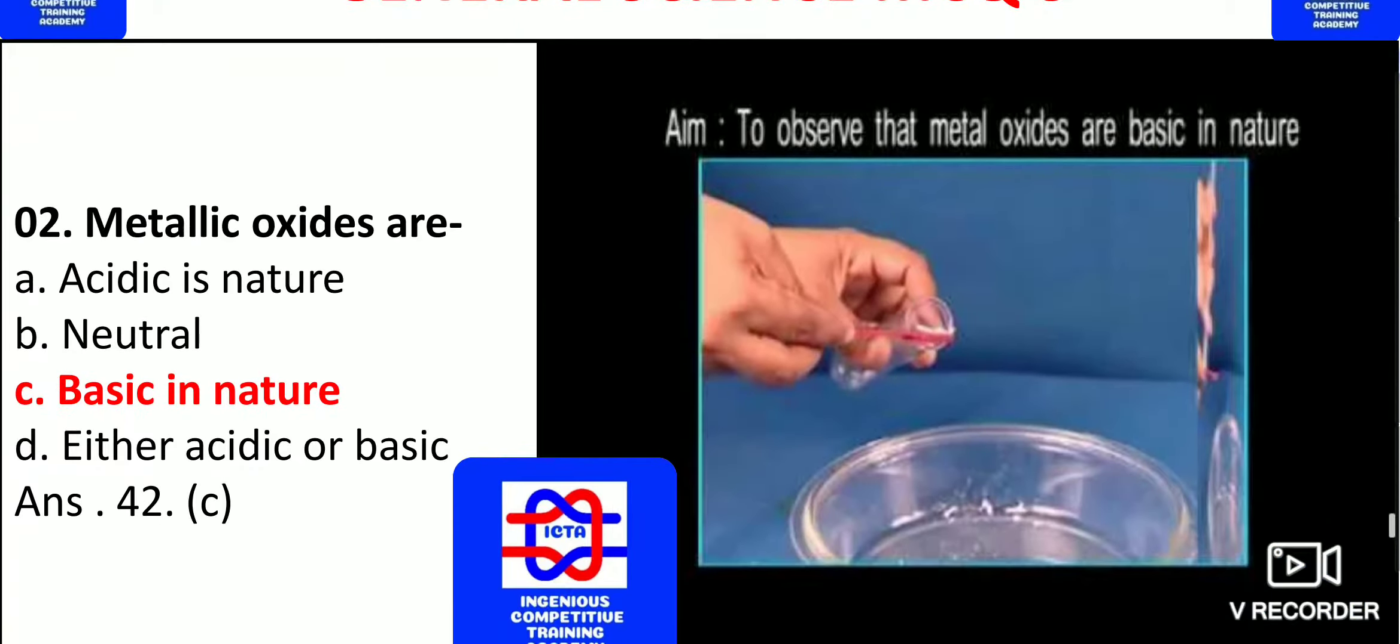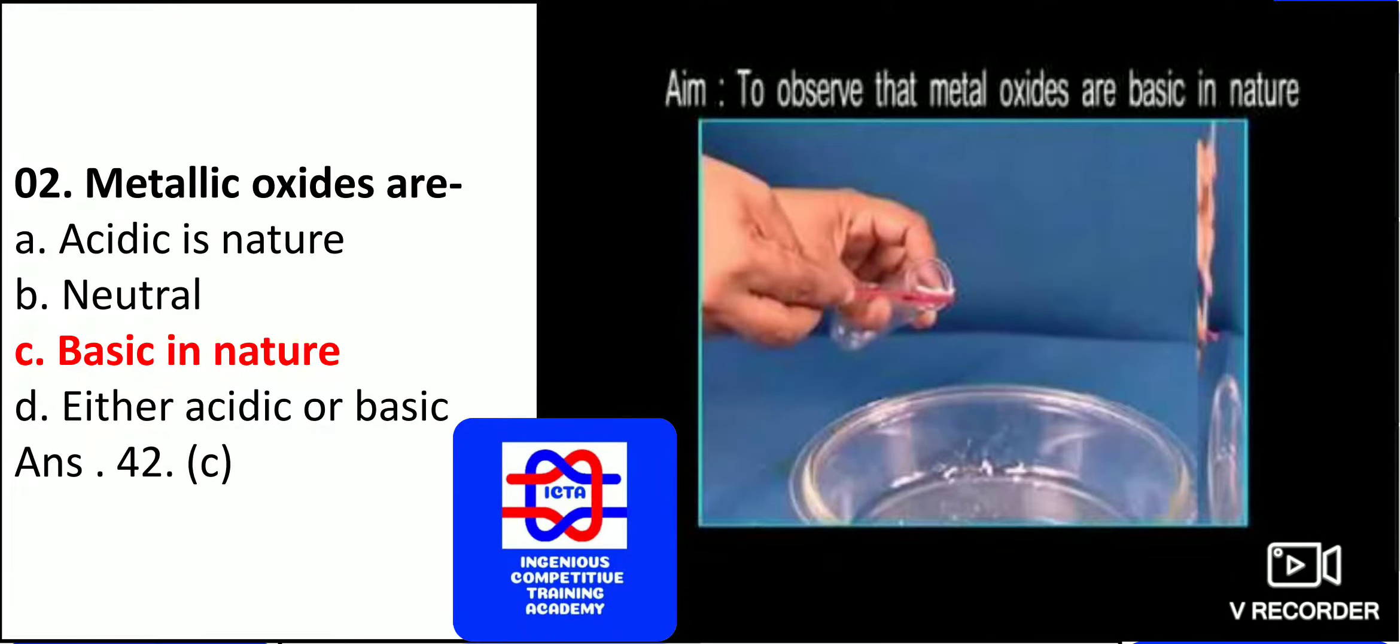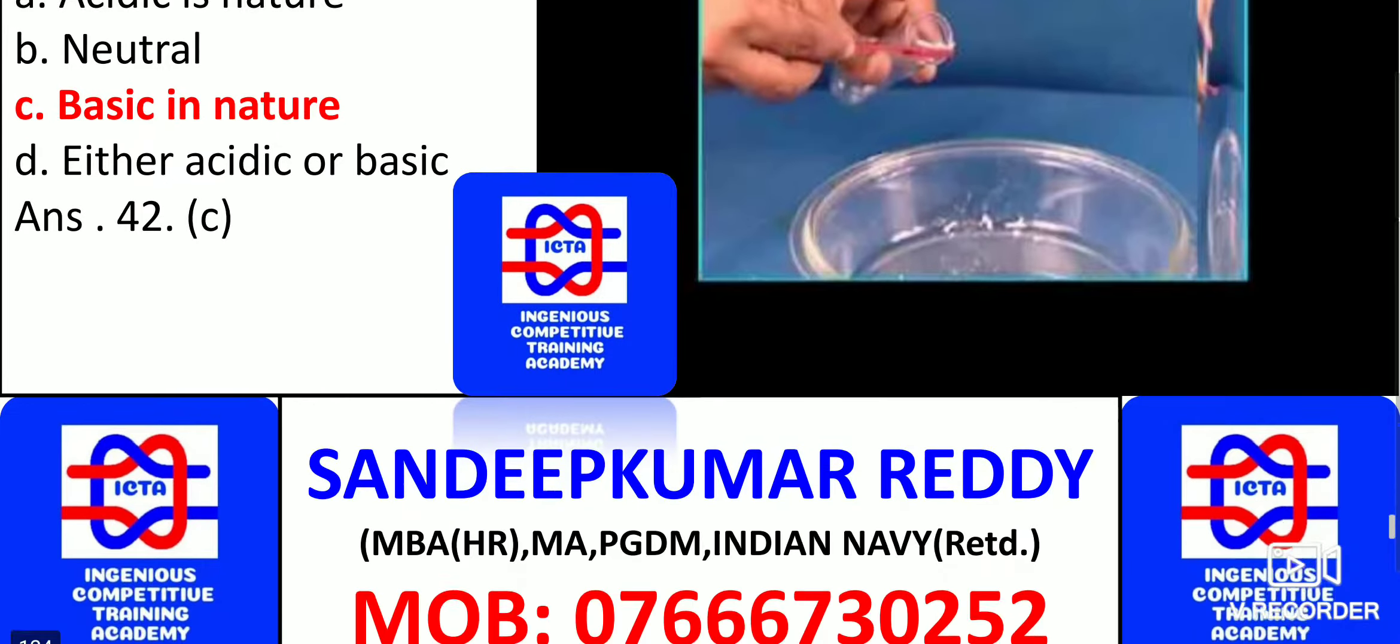Next we have the metallic oxides. As you can see, the metallic oxides are basic in nature. Please remember they are basic in nature. To observe that metal oxides are basic in nature, this is what you have to do the experiment. So metal oxides are in which nature? Basic in nature.